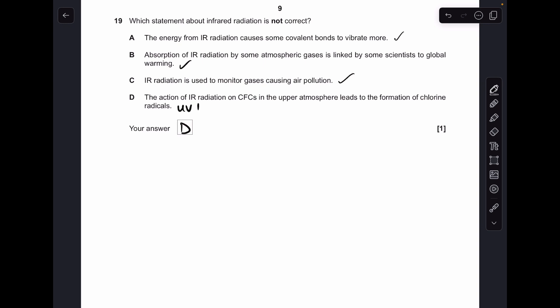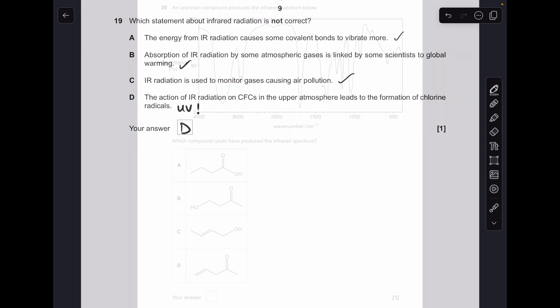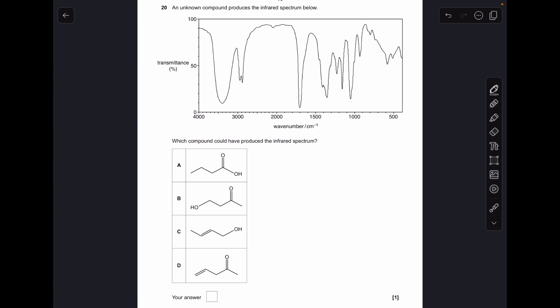And finally number 20, so what are the key absorptions in this infrared spectrum? So we've got an OH of an alcohol absorption there, we've got a C double bond O absorption there. So which of these molecules has got those in? Option B.